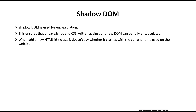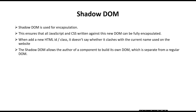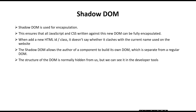Shadow DOM is one sectioned area. By using Shadow DOM we can separate the HTML DOM from the main DOM object. The Shadow DOM allows the author of a component to build its own DOM which is separate from the regular DOM. In this way, developers are encapsulating the JavaScript as well as the CSS selectors by creating a Shadow DOM, because Shadow DOM separates your DOM from the main DOM.